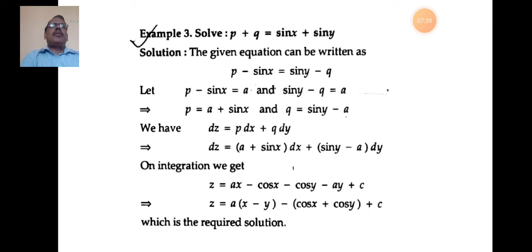Problem 3: Solve p + q = sin x + sin y. This is also the same type, third type. It contains p, q, x, and y; z is absent. The equation can be written as p - sin x = sin y - q. Setting each equal to a: p - sin x = a and sin y - q = a, so p = a + sin x and q = sin y - a. Substitute the values of p and q in dz = p dx + q dy.